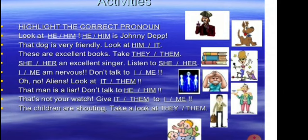Let's start. First one: 'Look at he or him?' Yes — look at him. Then: 'He or him is Johnny Depp?' It's 'he' because a verb follows it. The second one: 'That dog is very friendly. Look at — is it him or it?' It's 'it' because a dog is 'it.' The following one: 'These are excellent books. Take — they or them?' It's an order, so take them.